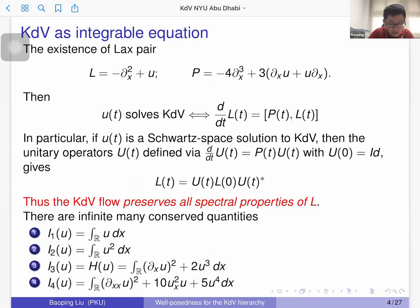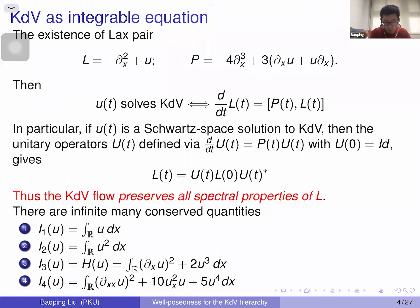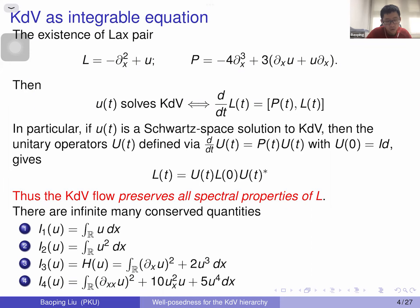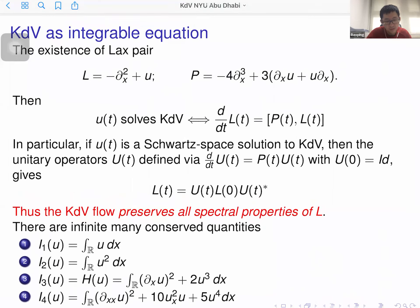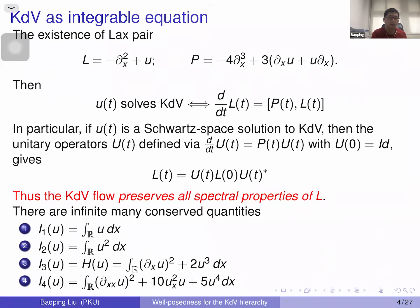In particular, if L is a second-order differential operator and P is a third-order differential operator, where u is an unknown function depending on time, then naively the commutator of L and P would be a differential operator. But for this pair, when you commute them, it is actually a multiplicative operator of order zero. The equivalence is: u solves the KDV equation if and only if ∂_t L = [P, L].